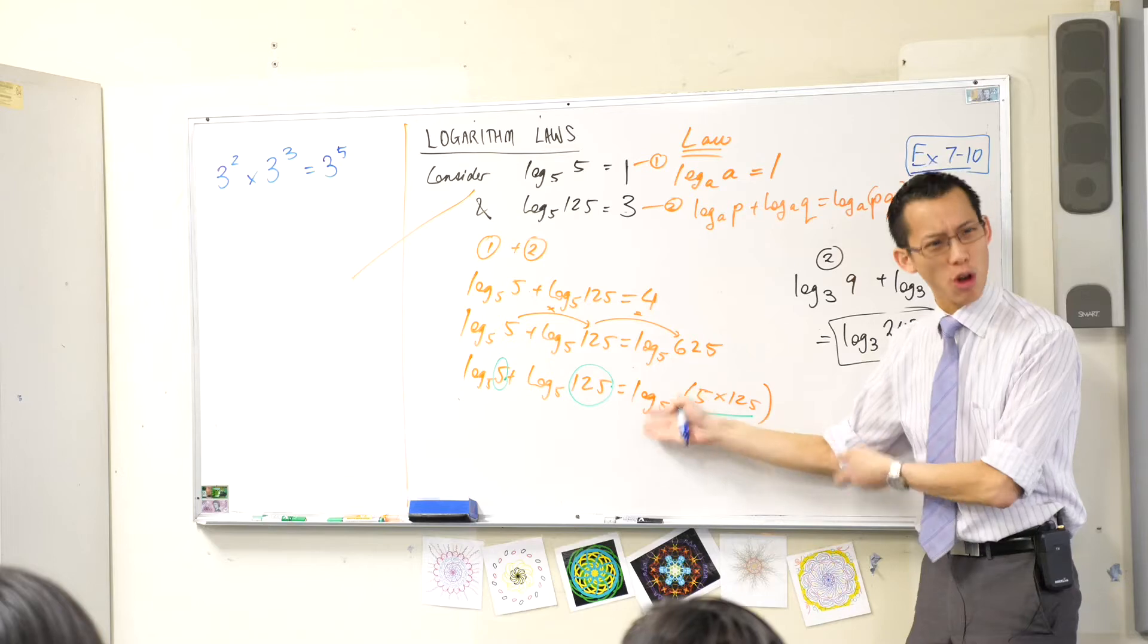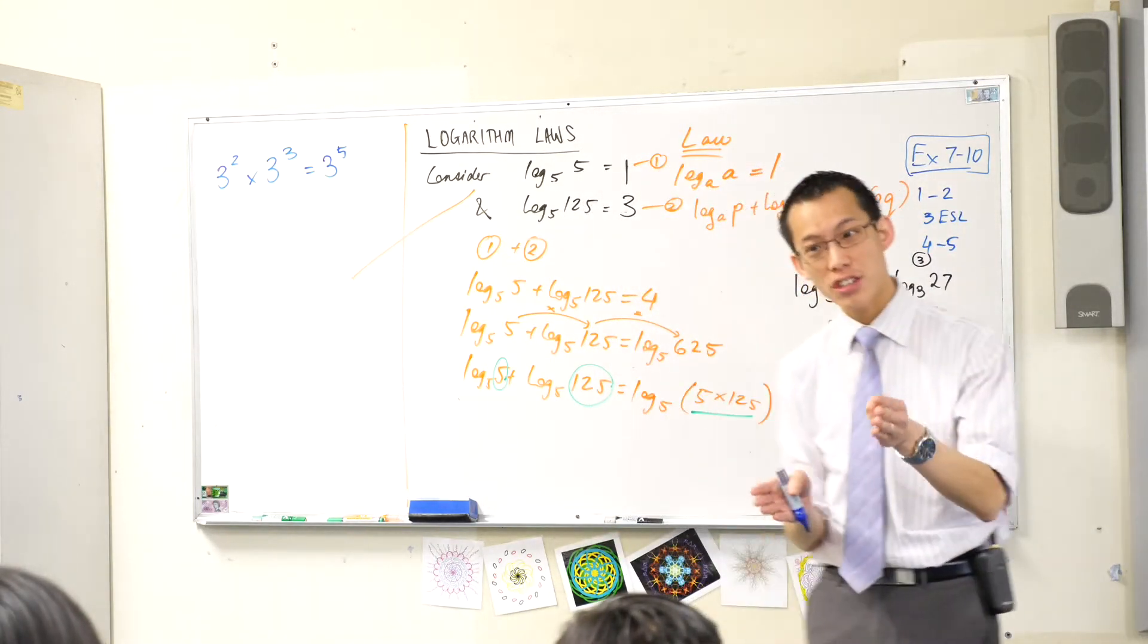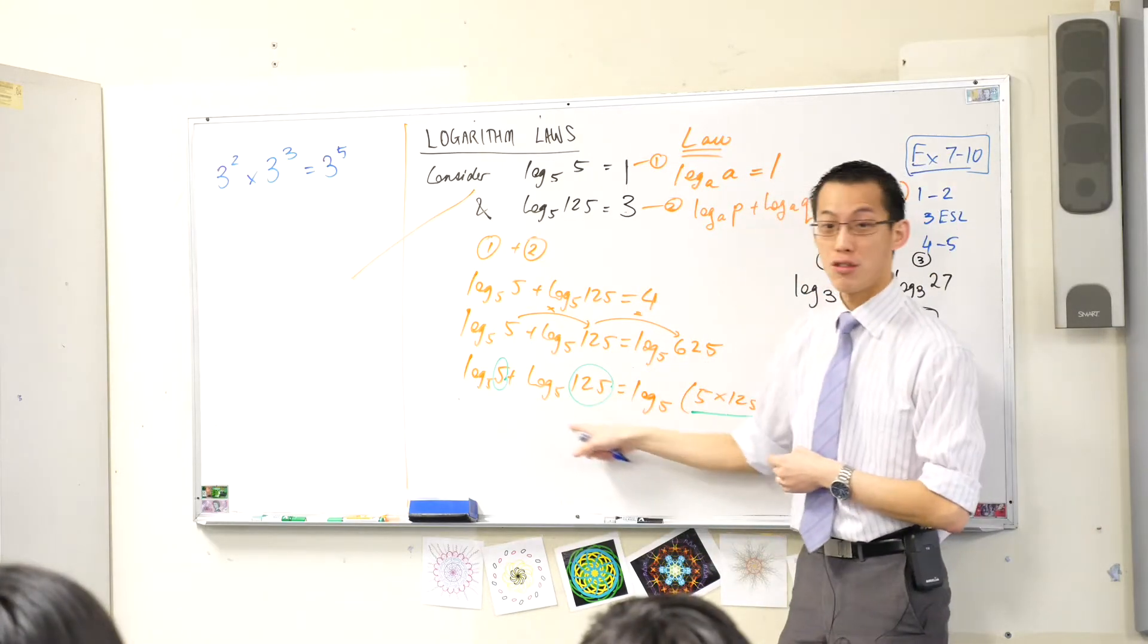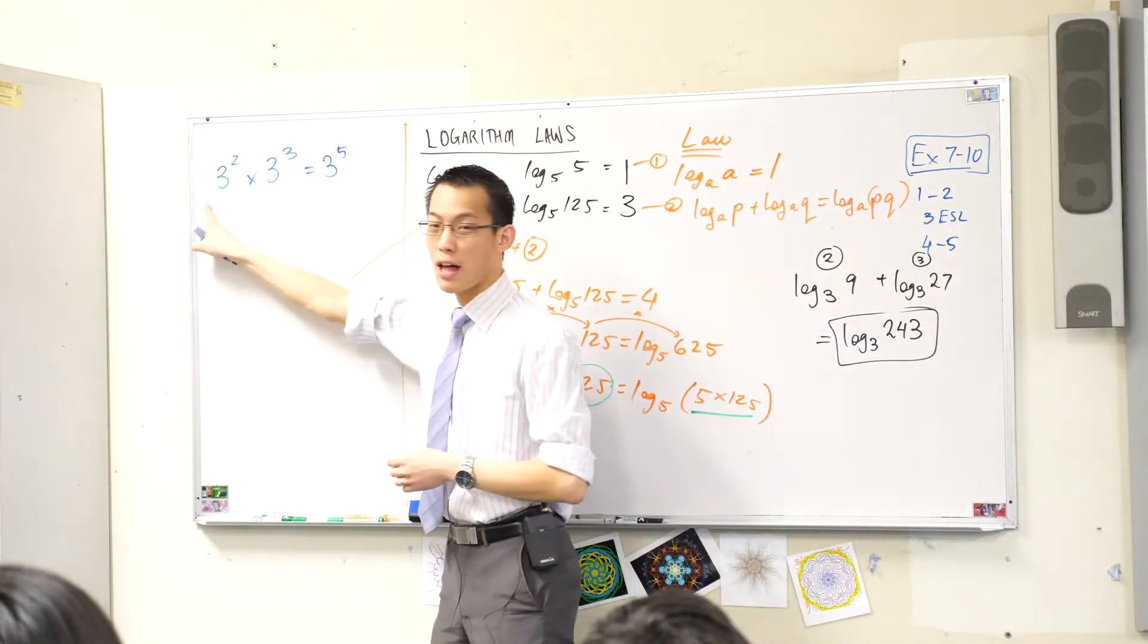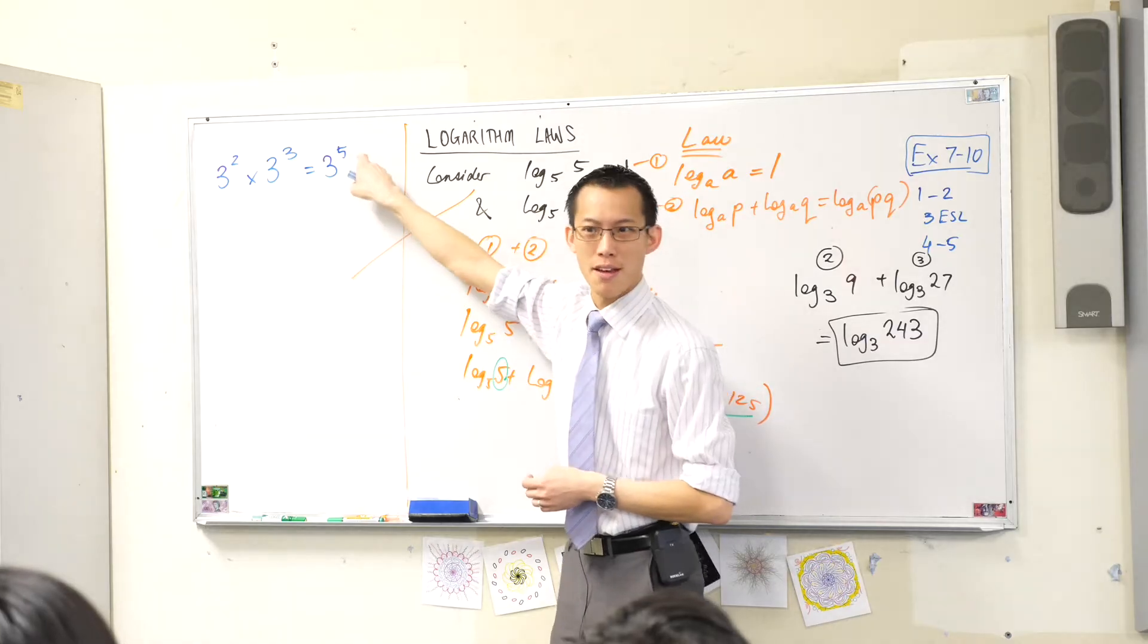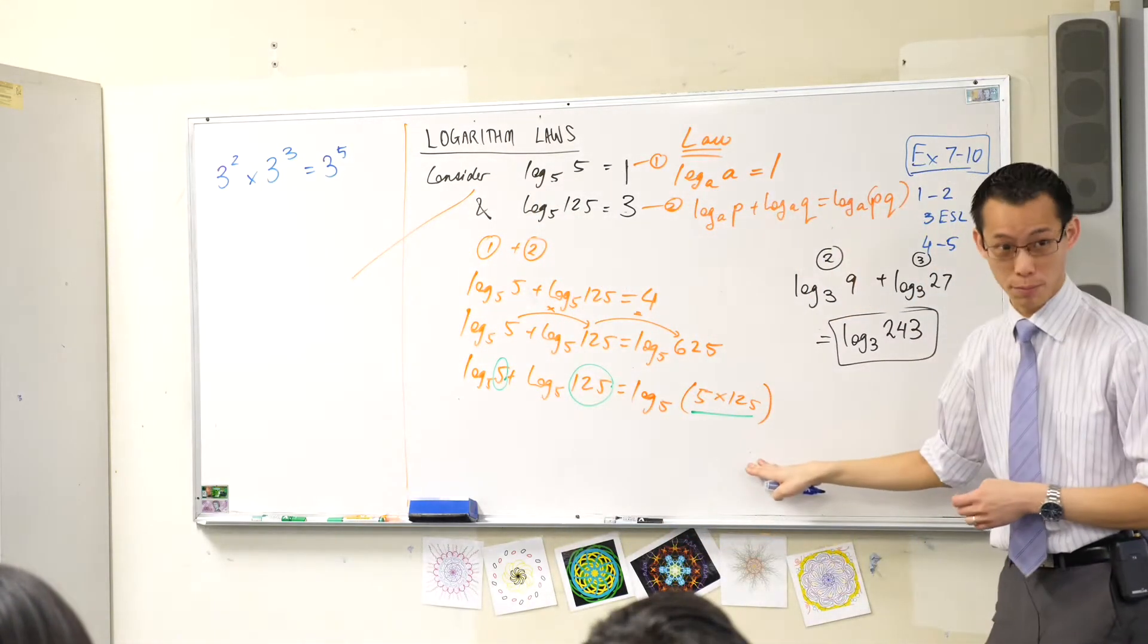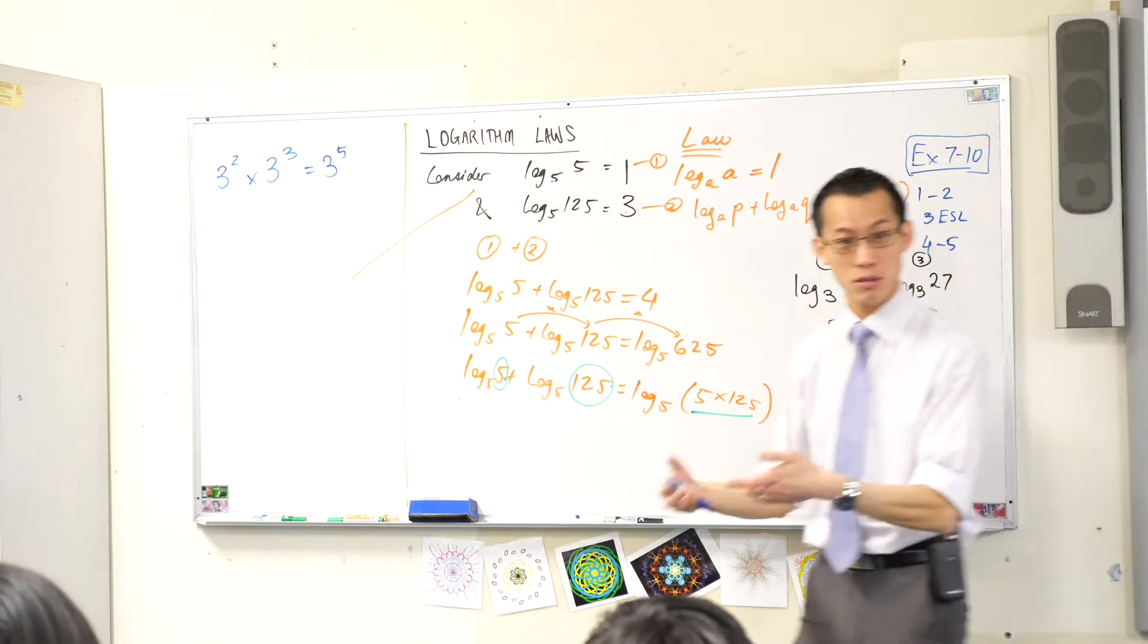Well remember how I said to you logs are like exponential equations but from another perspective. Actually the other perspective is from reverse, okay? So here when you add logs you multiply this number. When you multiply exponentials you add this. Multiplying becomes adding, adding becomes multiplying. So because you're looking from two different perspectives you get these two different results.